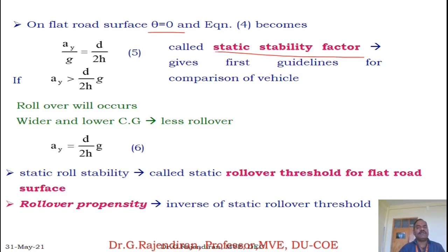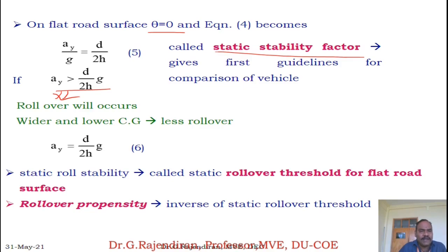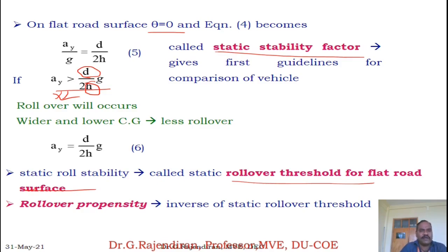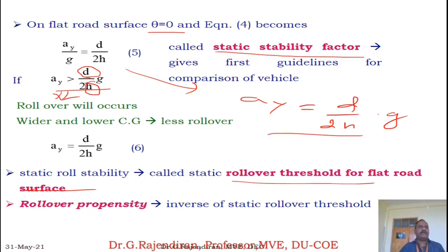If Ay is greater than (D/2H)·G, rollover will occur. To avoid this, we should use a lower centre of gravity and higher track width — a wider vehicle and lower centre of gravity gives more stability. So Ay equals (D/2H)·G is called the rollover threshold for the flat surface.